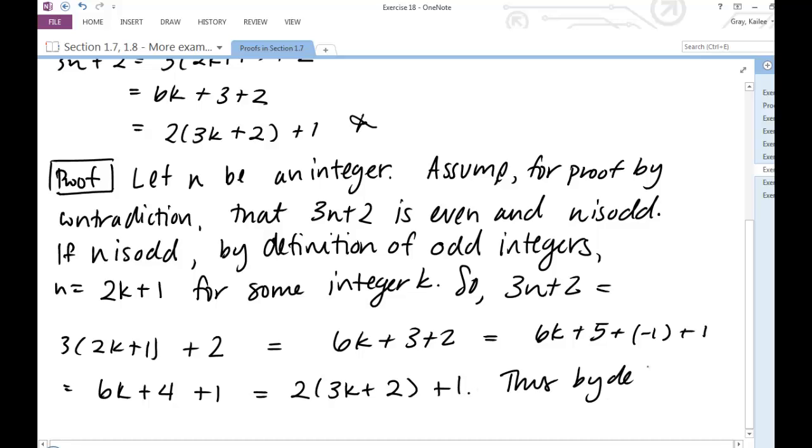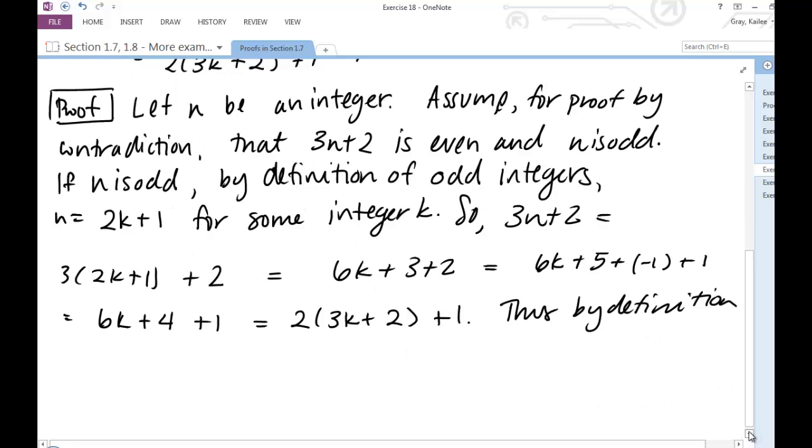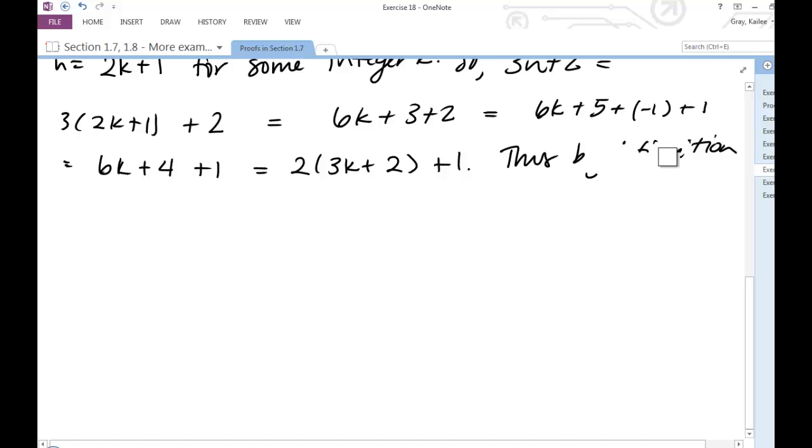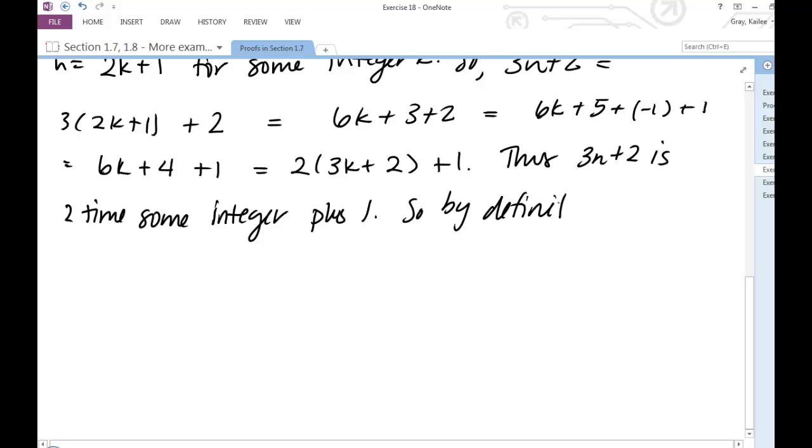Thus, by definition of odd integers, 3n plus 2 is 2 times some integer plus 1. So by definition of odd integers, 3n plus 2 is odd.